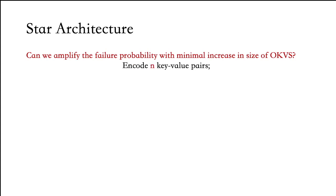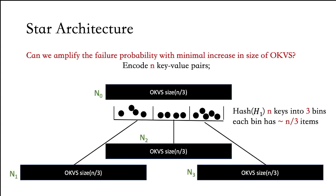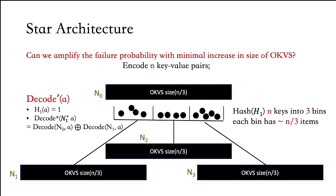Suppose you want to encode n key-value pairs. You choose a hash function h1 and hash into three bins. You associate a single OKVS with each bin and one OKVS as a central OKVS. Each of these OKVSs has parameters to encode n/3 items. To decode key a, you first apply hash function h1 to see which bin it falls into. Suppose it falls into bin 1 — then you decode a within the central OKVS n0 and the OKVS n1 and XOR both values. Suppose a fell into bin 3 instead — then you decode a within the central OKVS and the third OKVS and XOR both values.